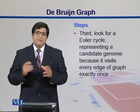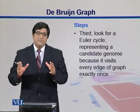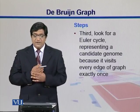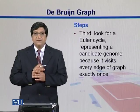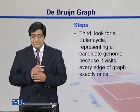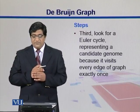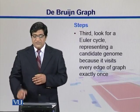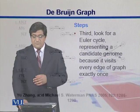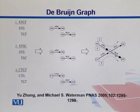Within the graph we have formulated, we try to find a Euler cycle. As we have seen earlier, this is where we visit each edge of the graph exactly one time.